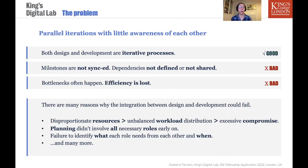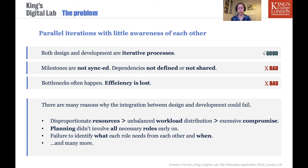The problem I see is that we have two iterative processes developed in parallel with little awareness of each other, which could lead to milestones not being synced and dependencies not defined or shared. This could cause bottlenecks and frustrations for the people working on the project, meaning efficiency is lost. The reasons why design and development are not well integrated could vary — disproportionate resources between teams resulting in unbalanced workload, or during planning not all necessary roles were involved, generating conflicts about dependencies not being identified early.